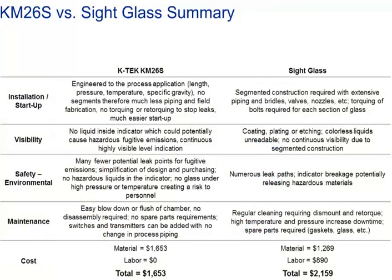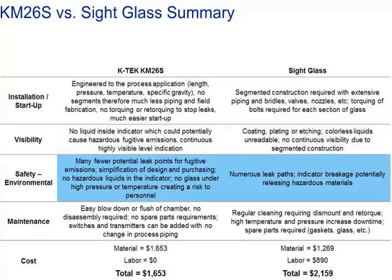A side mount offers continuous visibility as opposed to the segmented construction of sight glasses. Other advantages include cost savings over complex bridle assemblies with additional valves and leak points. Sight glasses are prone to discoloring, plug connections, leaks, glass erosion, cracks, and valve problems. All of these potential problems are eliminated by using a magnetic level gauge.